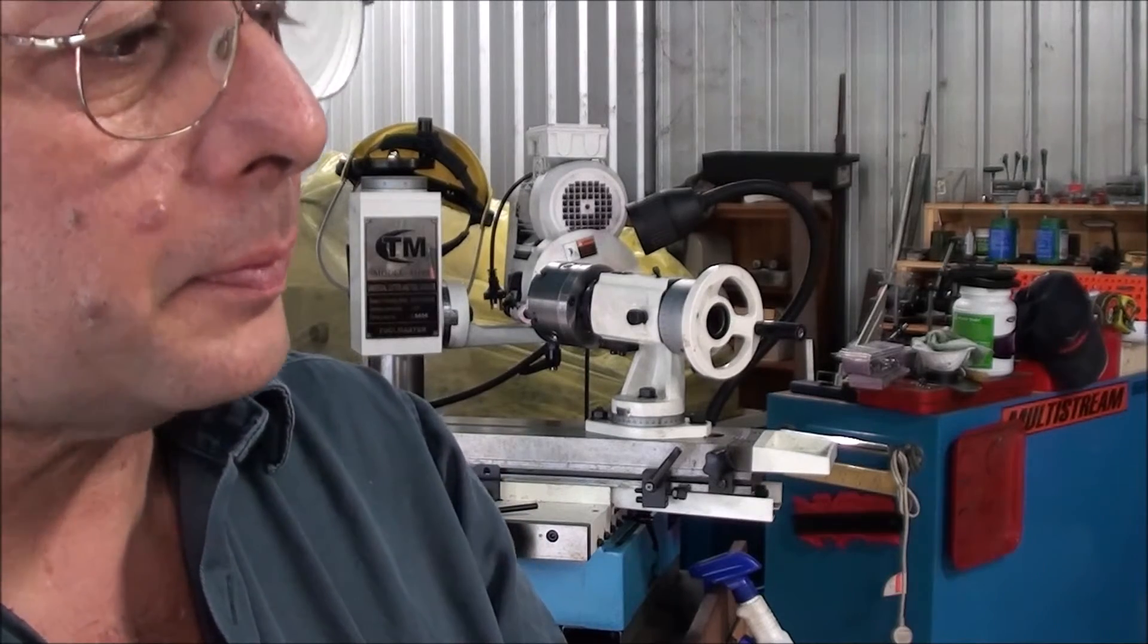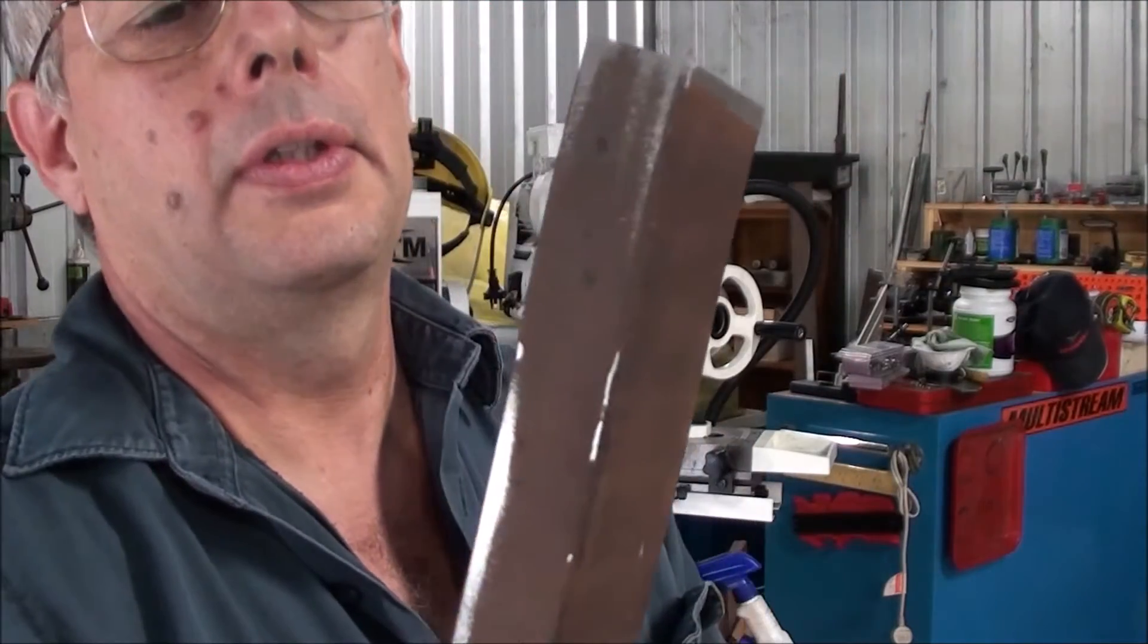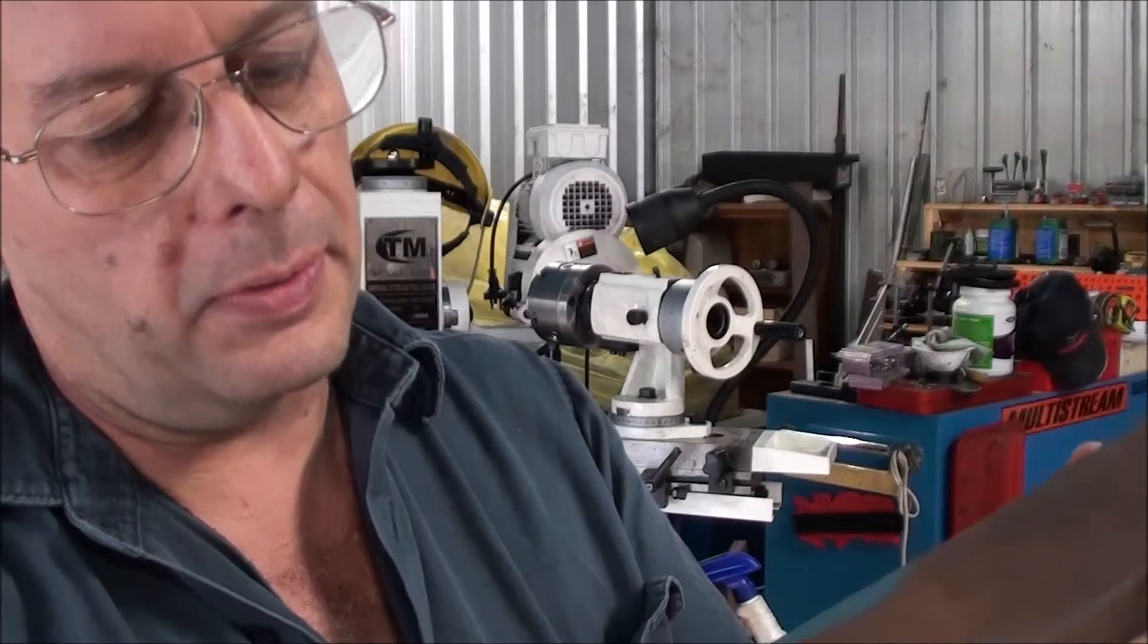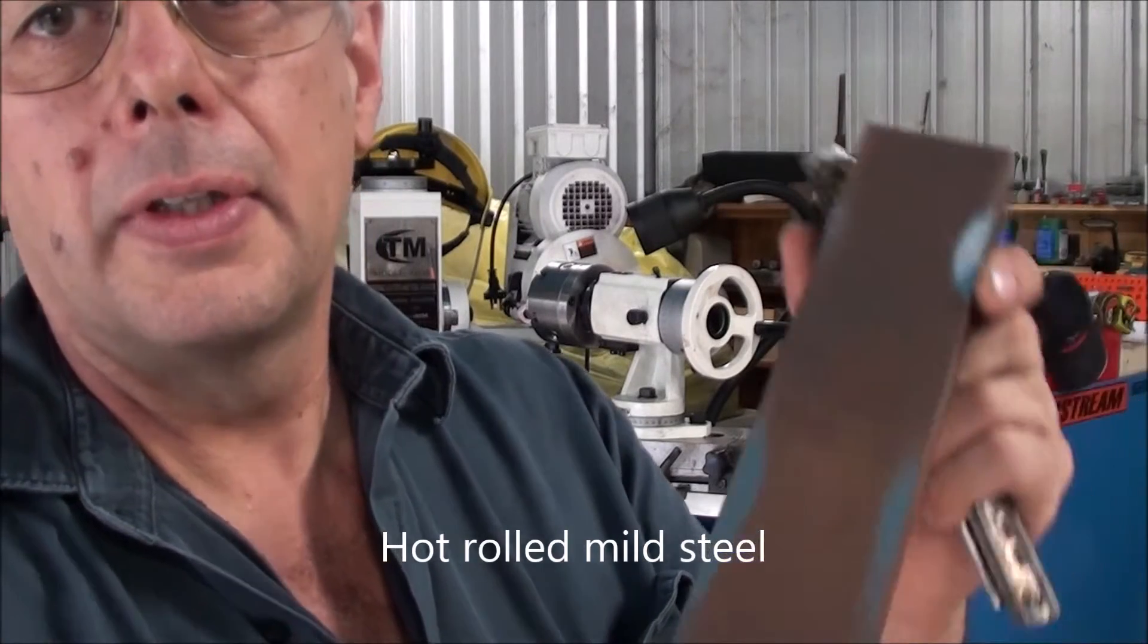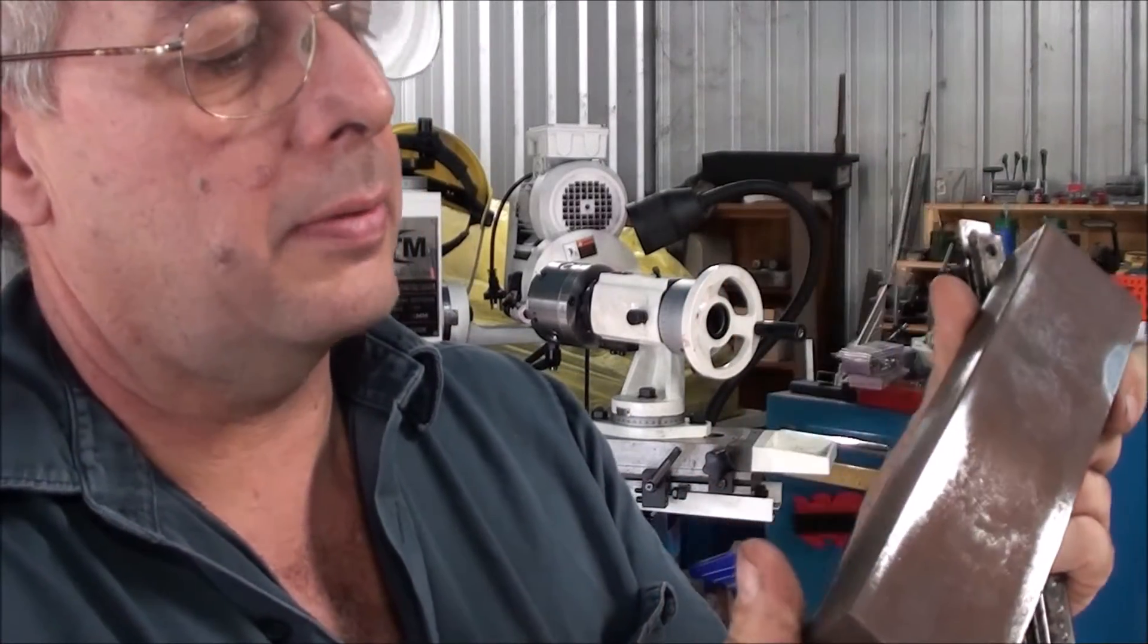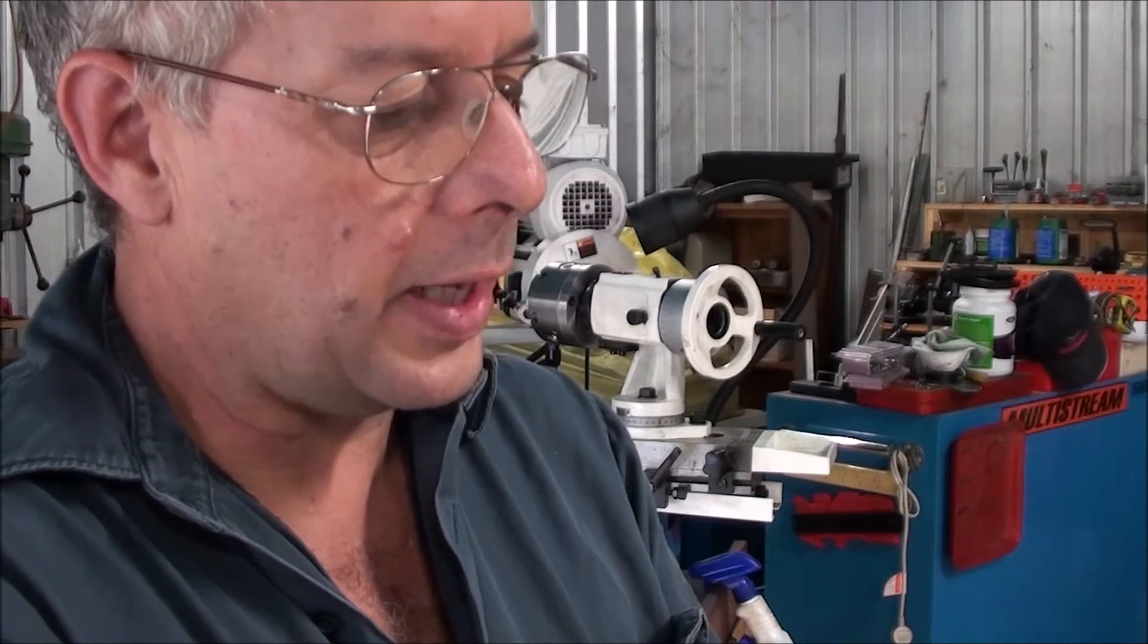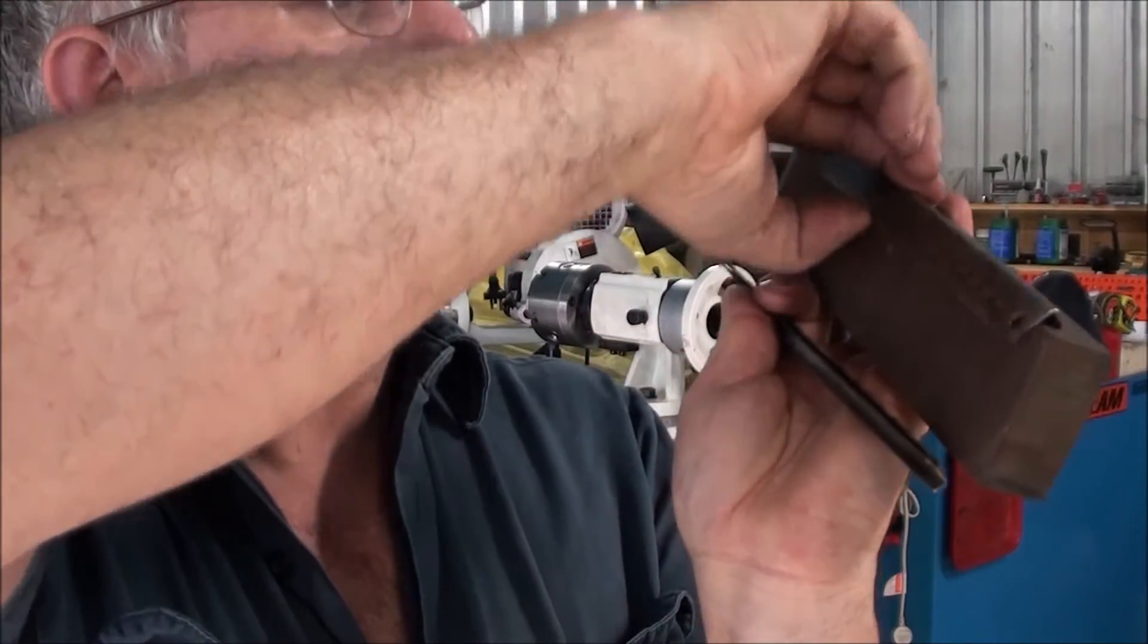What we're going to do is I've got a lump of 50 by 25 or 2 inch by 1 inch in round imperial numbers. And what I'm going to do is start off by facing that in the shaper I think. I might knock a bit of rust off it and then we'll face it in the shaper.